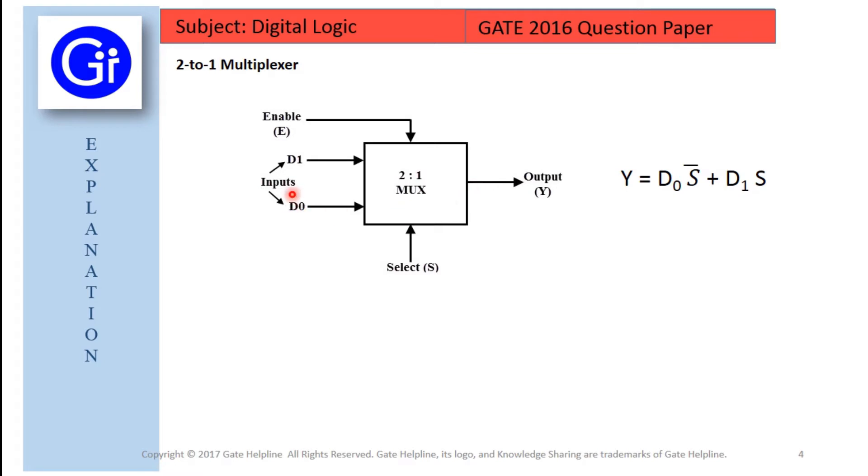Since there are two input signals, only two ways are possible to connect the input to the output. So one select is needed to do this operation. If the select line is low, then the output will be switched to D0. Whereas if the select line is high, then the output will be switched to D1.